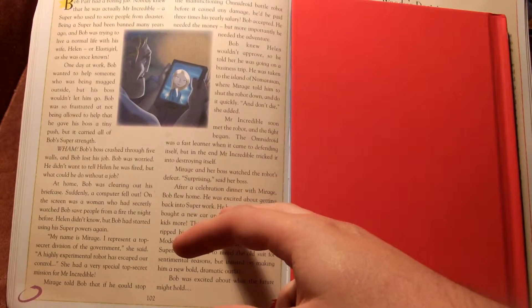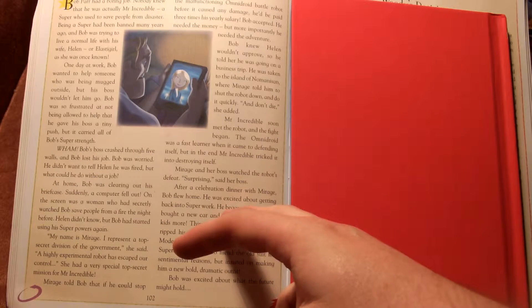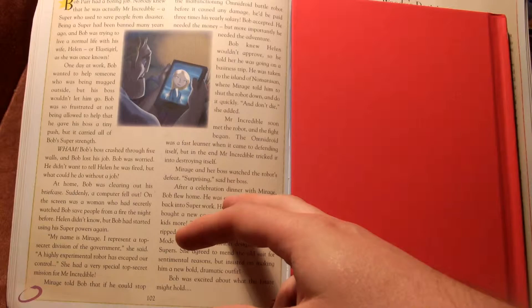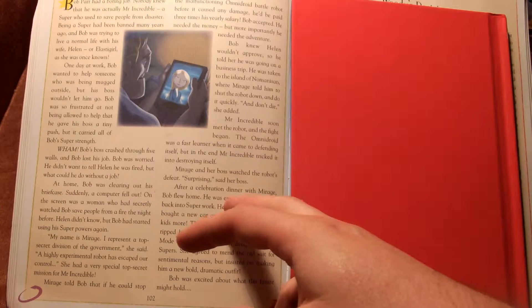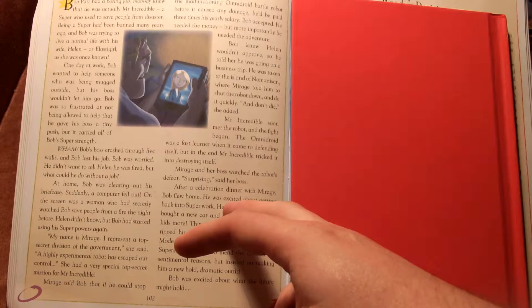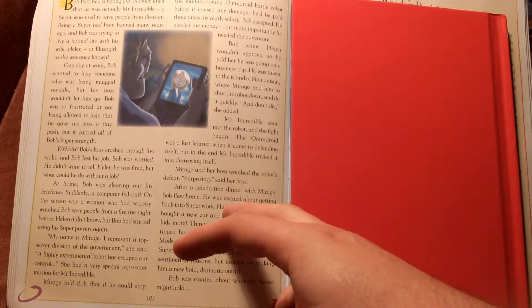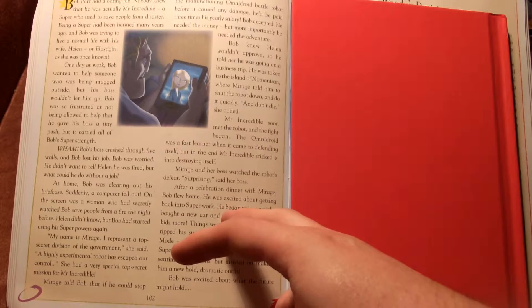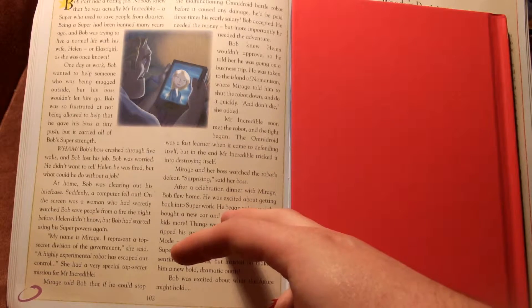One day at work Bob wanted to help someone who was being mugged outside but his boss wouldn't let him go. Bob was so frustrated at not being allowed to help that he gave his boss a tiny push but it carried all of Bob's super strength. Wham! Bob's boss crashed through five walls and Bob lost his job.